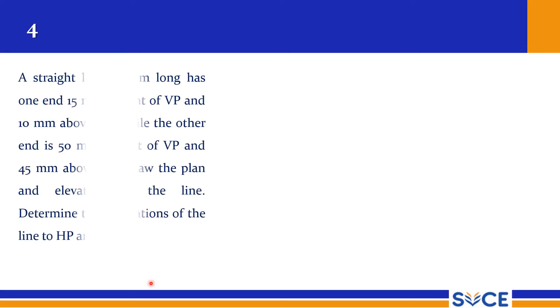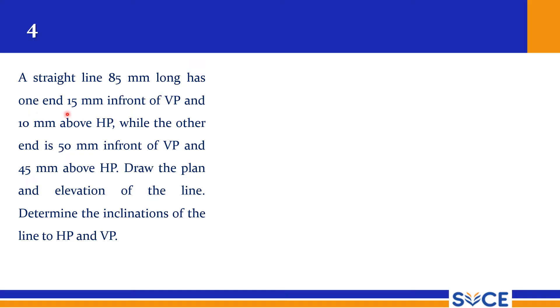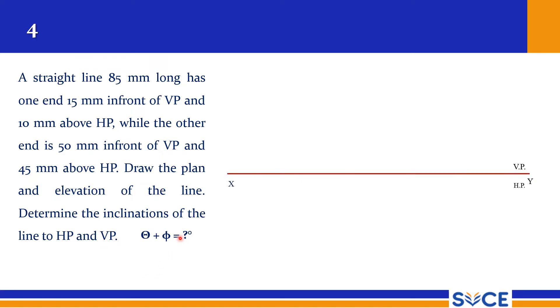Students, we will see another set of questions where we need to find the true inclinations. A straight line 85 mm long has one end 15 mm in front of VP and 10 mm above HP, while the other end is 50 mm in front of VP and 45 mm above HP. Draw the plan and elevation of the line and determine the inclinations with HP (theta) and VP (phi). We need to find these two angles theta and phi.